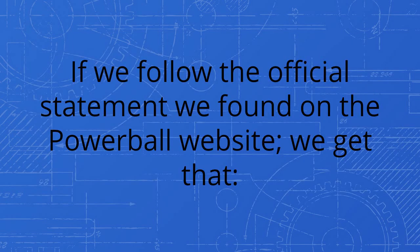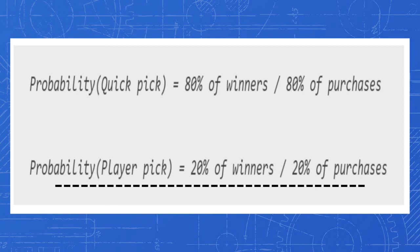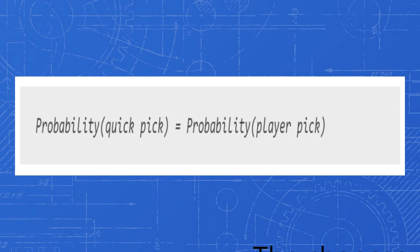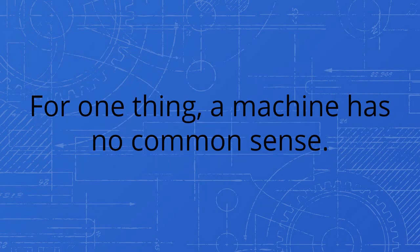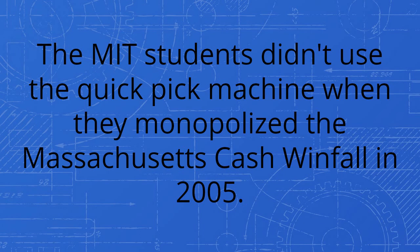If we follow the official statement we found on the Powerball website, we get that probability of quick pick equals 80% of winners over 80% of purchases. Probability of player pick equals 20% of winners over 20% of purchases. Therefore, the official Powerball website only means that the chances of those who use the quick pick machine and those who pick numbers by hand are just the same. Perhaps the main thing that you need to understand is that you don't have control when you use the quick pick machine. For one thing, a machine has no common sense. It just picks numbers randomly for you without analyzing the numbers. If you pick your numbers, then you have better control in selecting your numbers. The MIT students didn't use the quick pick machine when they monopolized the Massachusetts Cash Windfall in 2005.